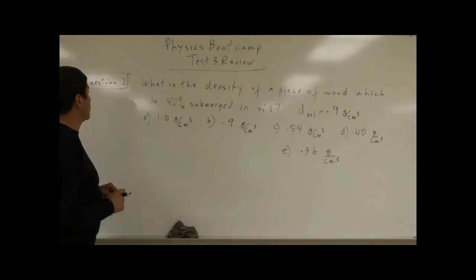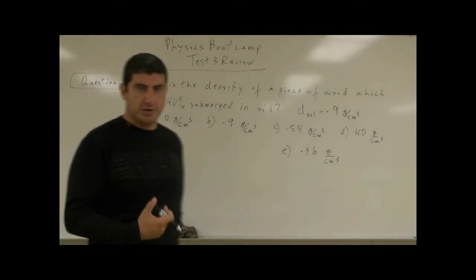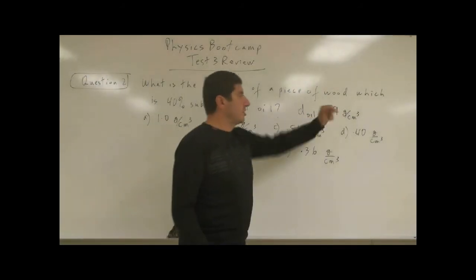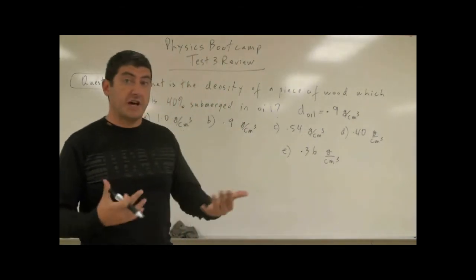Question 2 for the test 3 review says, what is the density of a piece of wood which is 40% submerged in oil? And it gives you the density of oil is 0.9 gram per cubic centimeter. So what is the density of that wood?